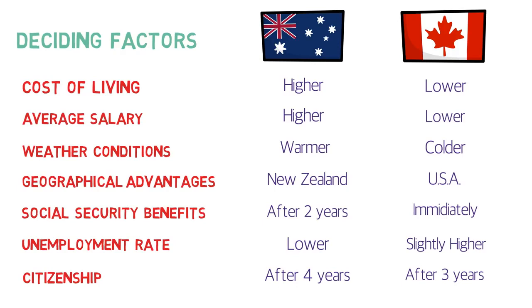These were the key factors through which you can decide whether to immigrate to Canada or Australia. Both are great countries offering huge benefits to permanent residents, and they are more or less very similar. First consider the immigration process and your eligibility, then weigh the pros and cons of each country based on your personal situation.